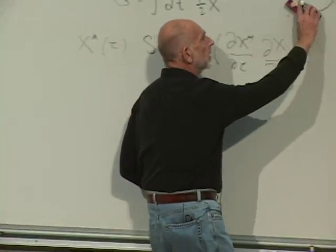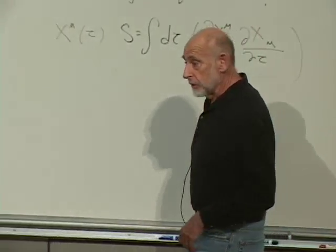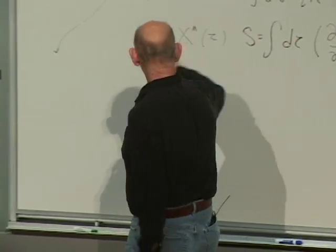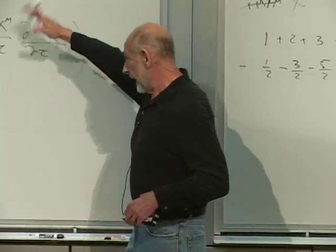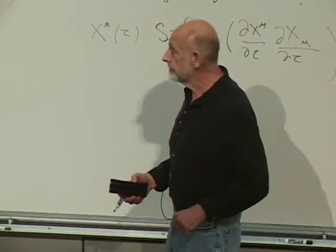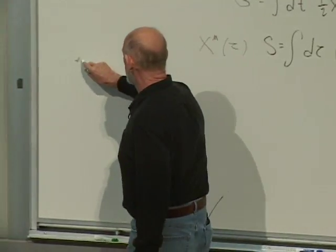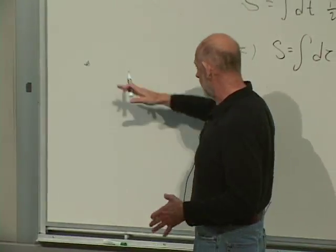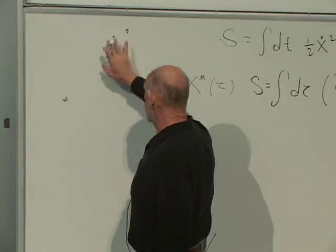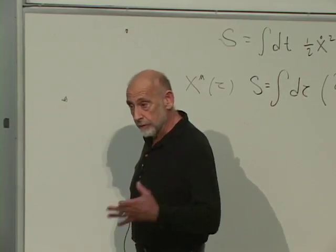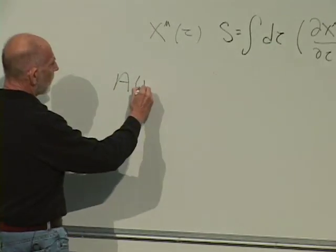In quantum mechanics you do something totally different with the action. Instead of asking what is the trajectory given two end points — which gives a straight line with constant velocity — you ask: what is the amplitude that a particle starting at one point is detected at another point at a later time? That's the question you ask in quantum mechanics: what is the amplitude for the particle to go from here to here?